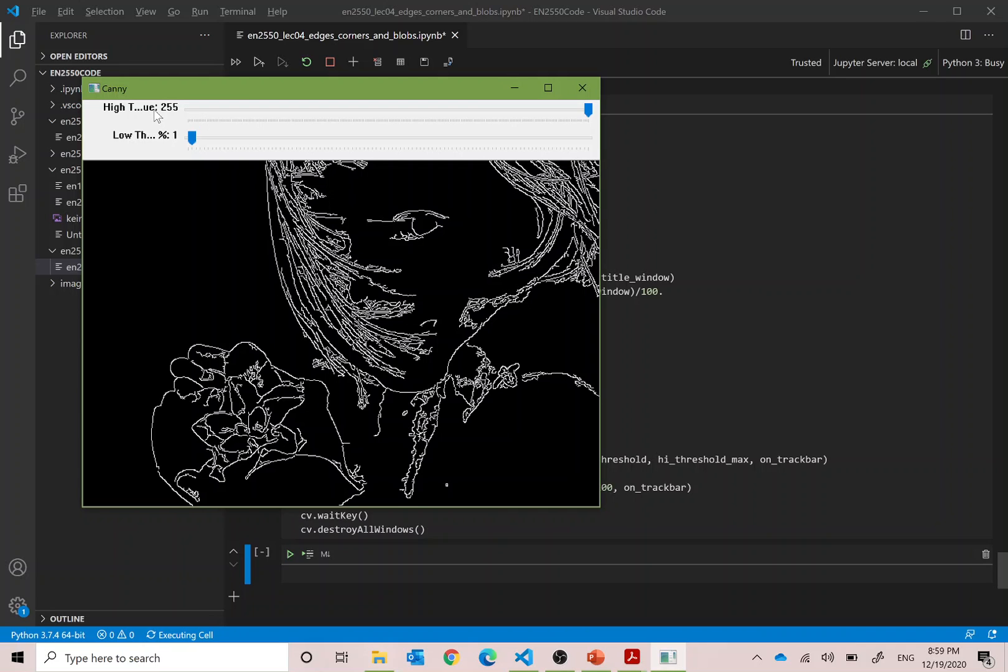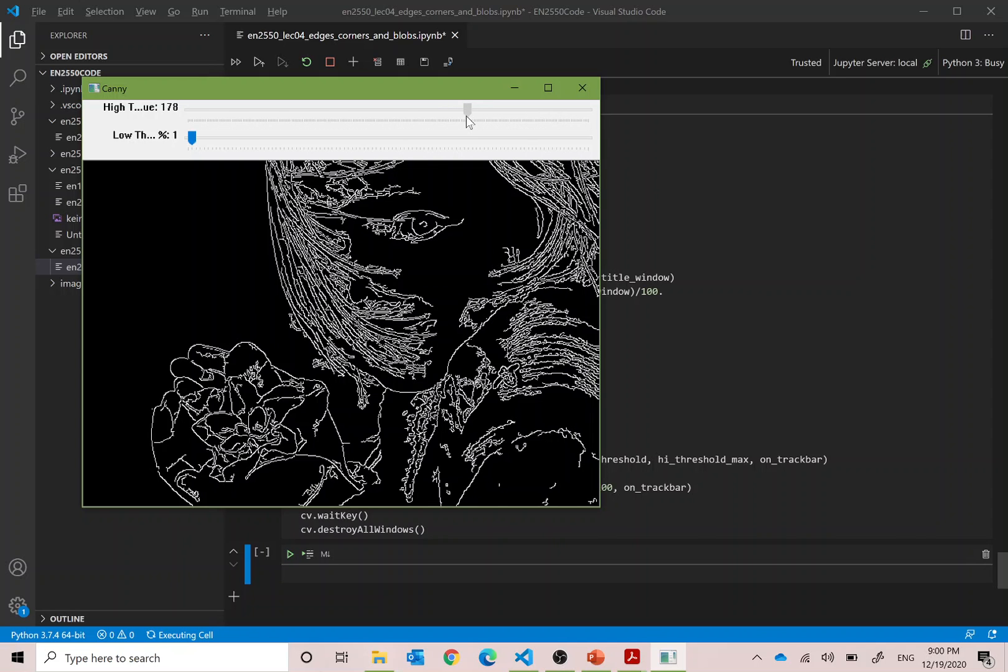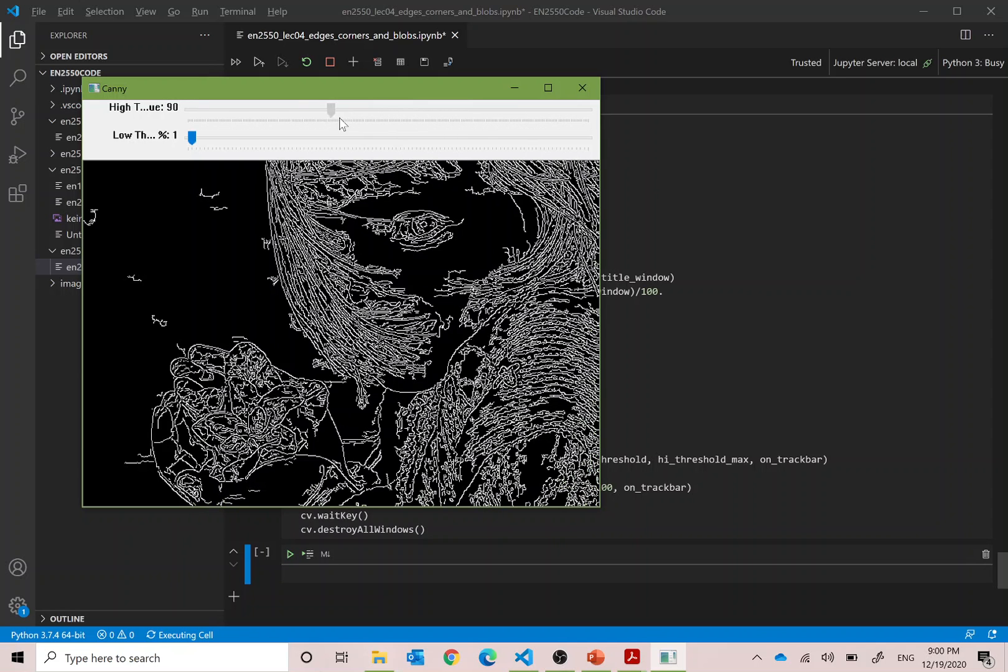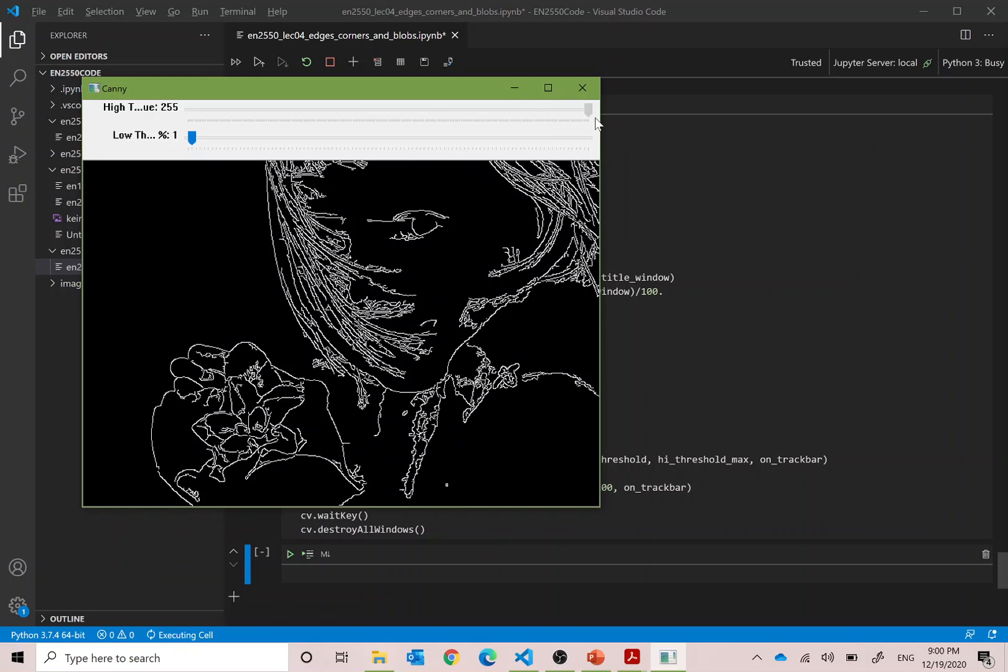On the top, you have the high threshold. High threshold controls the level of the edges at which the edge curves start. If I lower that, the number of edges that you see will increase because with the low threshold, the number of edges will increase. When I increase that to higher value, like 255, the number of edges that you see will be less.